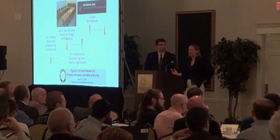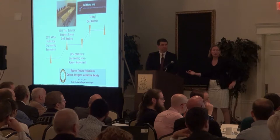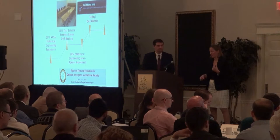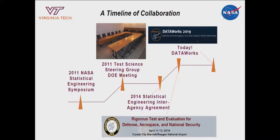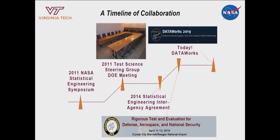That collaboration benefited both of our organizations and really helped shape the conversation. So we decided to build a formal agreement — not just calling each other when we need a favor, but an agreement involving leadership, workshops, and webinars. That was the origin of the statistical engineering agreement, which led to the first rigorous test and evaluation, defense, aerospace, and national security workshop four years ago. Expanding the collaboration further, we partnered with the Conference on Applied Statistics and Defense, which has a long history starting as the Army Conference on Design of Experiments. One of our NASA collaborators, Jonathan Rassum, came up with the name DataWorks — emphasizing the analysis piece and the data — and that was the origin of this workshop.